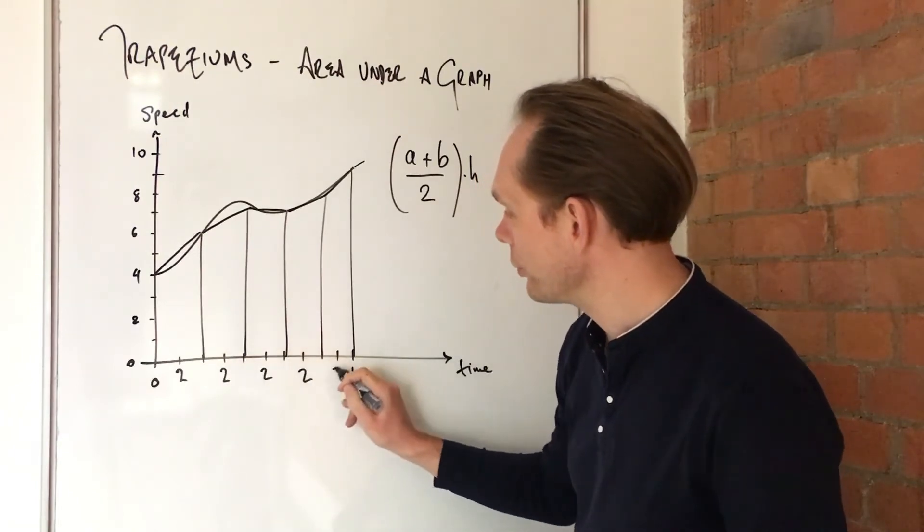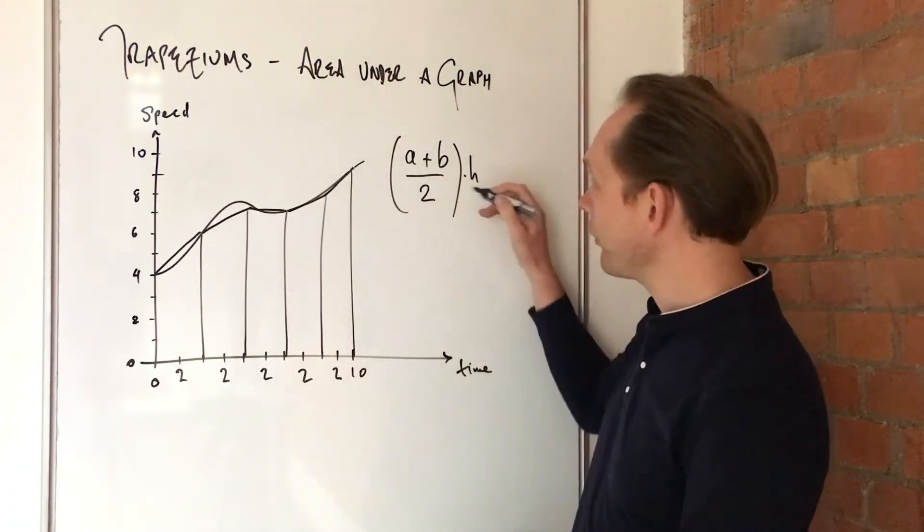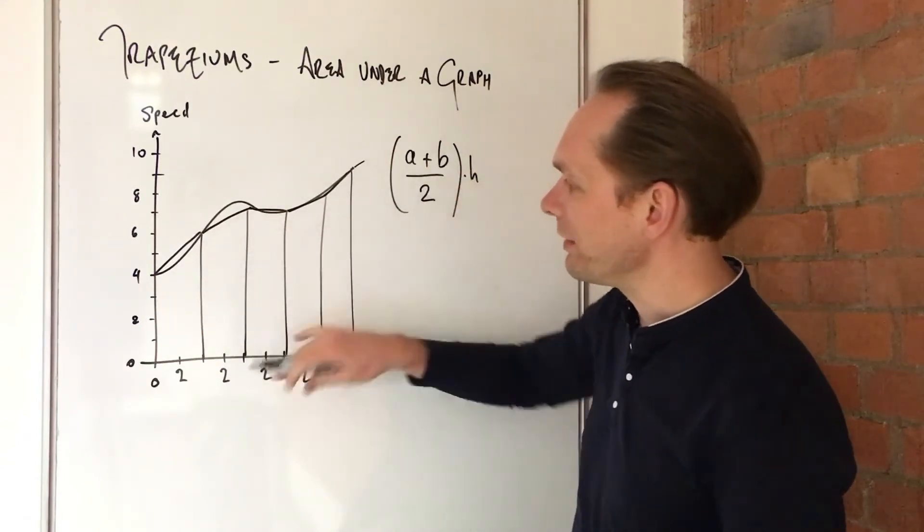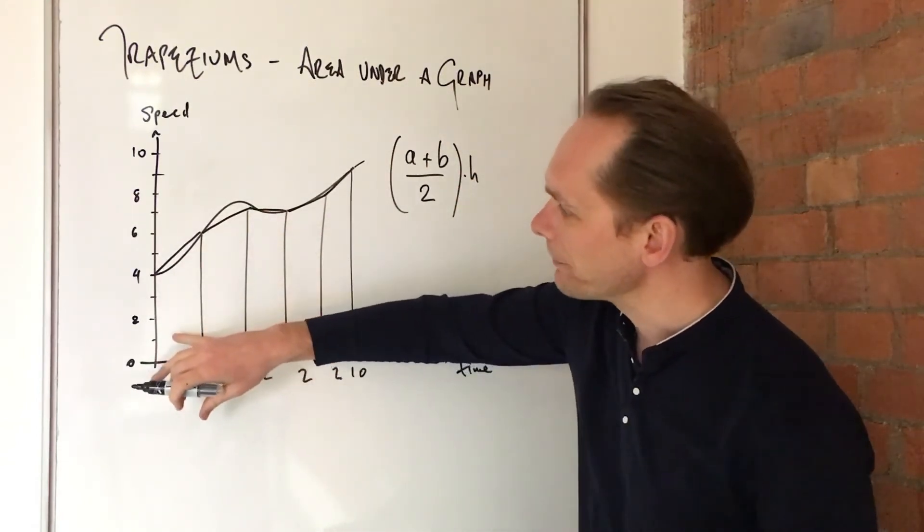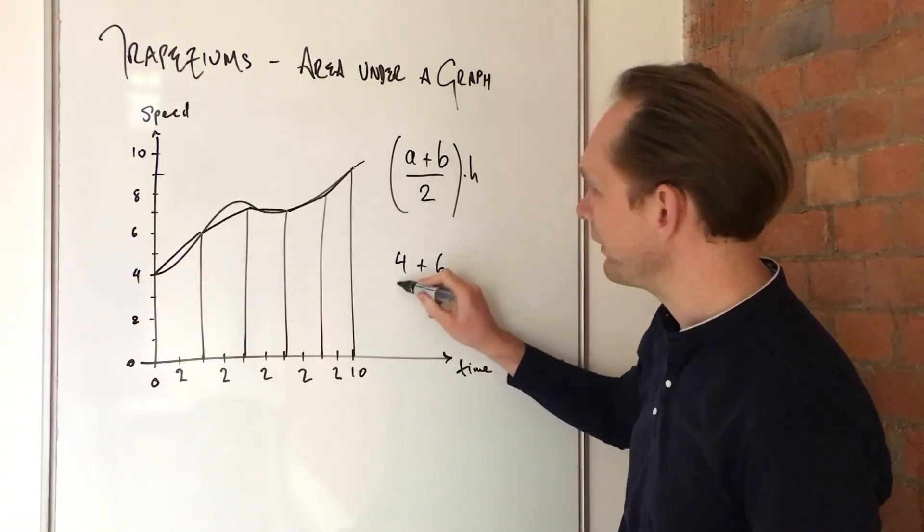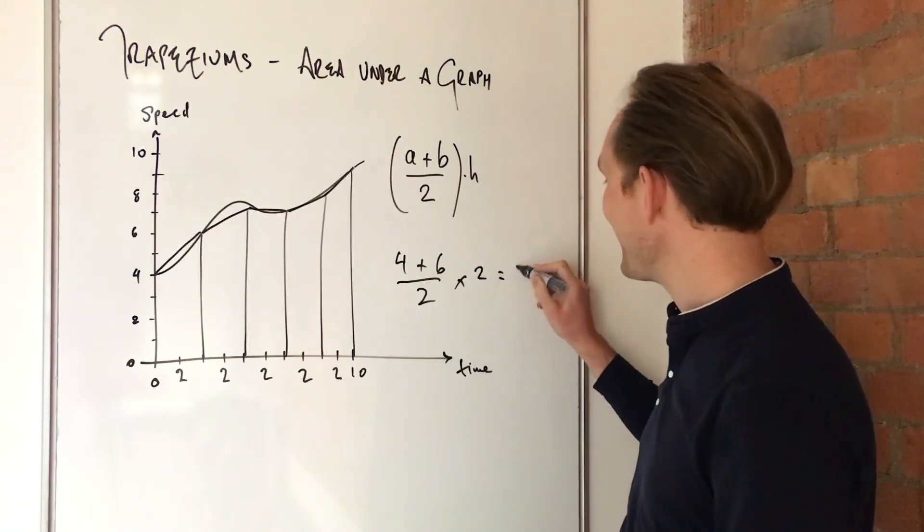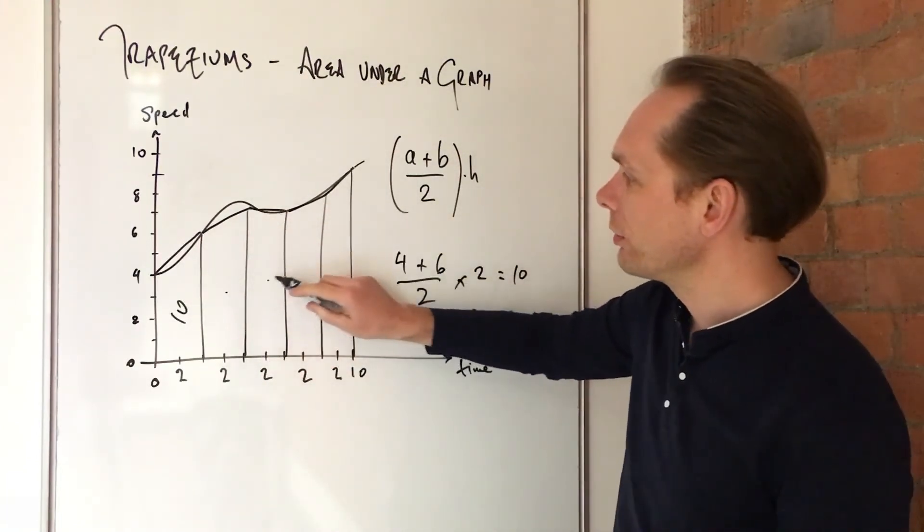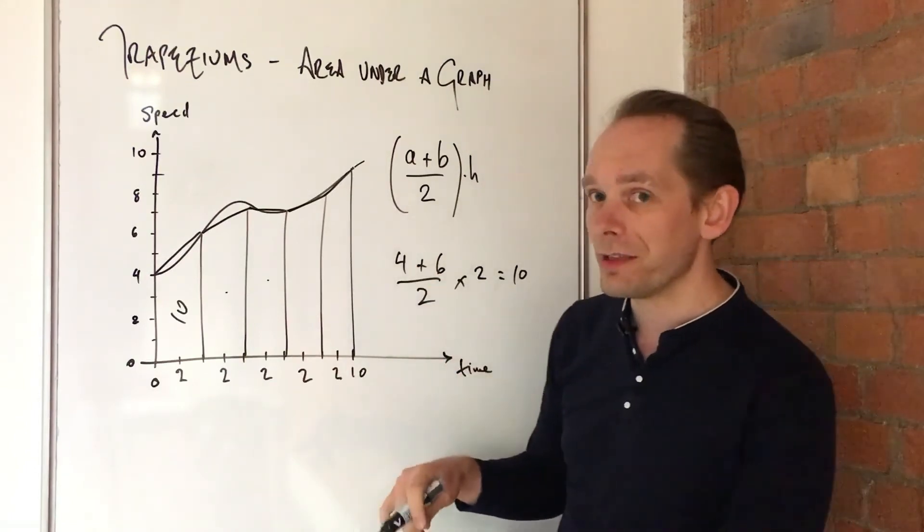There's two each time. Two, two, two, two, two. You've got to take that width as your height, and for each one, take the verticals as your a and b. So let's just do the first one, and then you'll get the idea. So this is four and six. Four plus six divided by two times two. So that's ten. So the area of that one is ten.